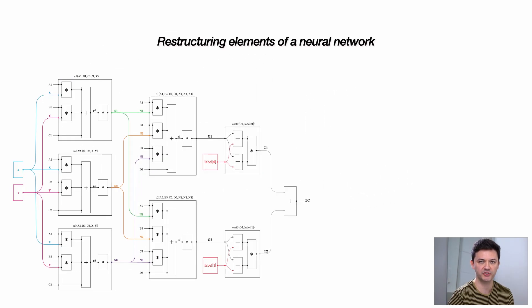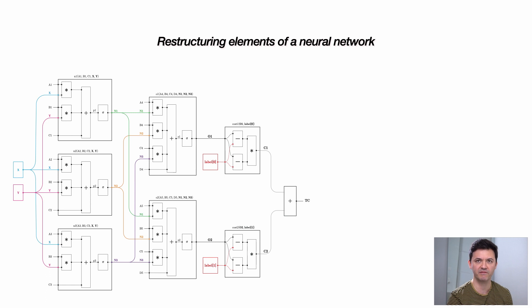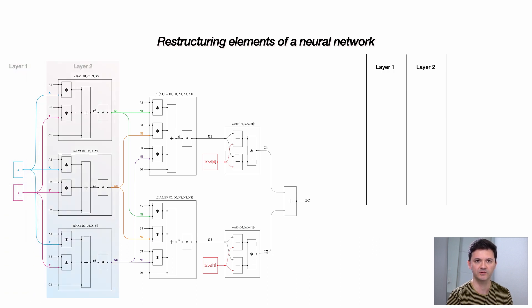Now let's see how we can restructure this neural network. Our general strategy is to see what are the roles in a neural network, what common roles we can identify, and how to organize these functions within different layers. We have layer 1 (the input layer), layer 2, layer 3, and the cost function. Traditionally we do not think about the cost function as a layer, but I think it's a good idea because it does act as a layer — it comes after the last layer.